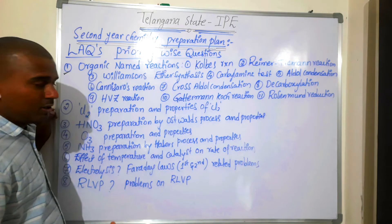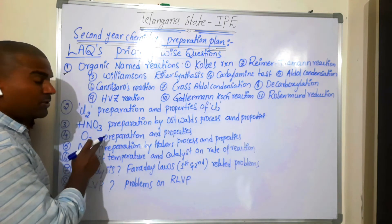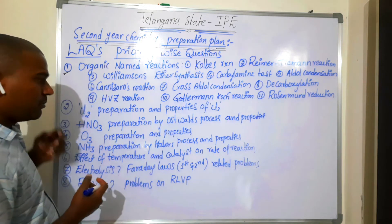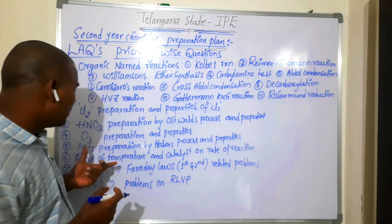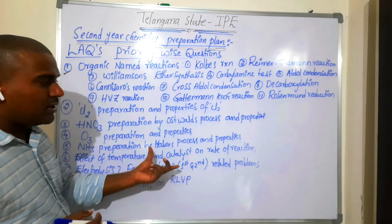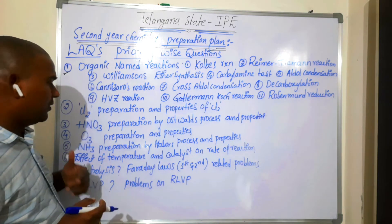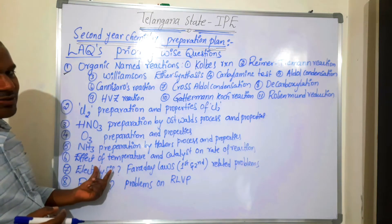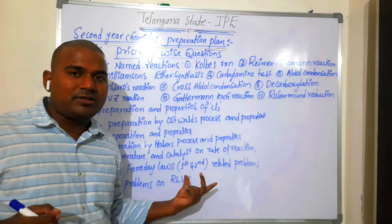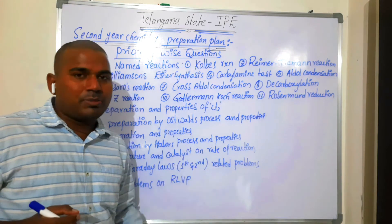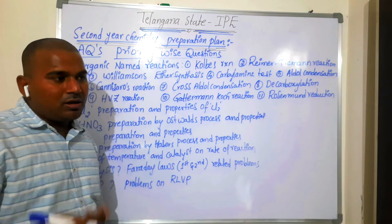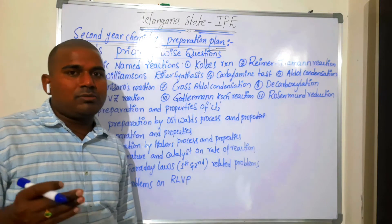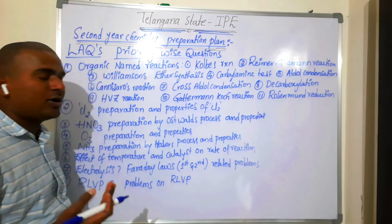Next, ozone preparation and properties — easy question but an important one. Ammonia preparation by Haber's process and its properties. Next, effect of temperature and catalyst on rate of reaction — very, very important. Also, electrolysis and Faraday's laws: define electrolysis and explain Faraday's first law and related problems. You should choose your NCERT material and be prepared.